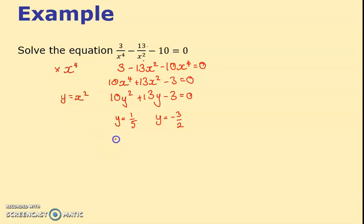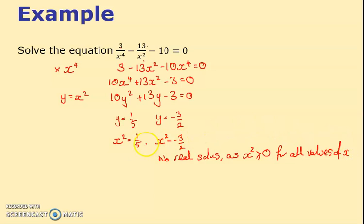I've got the same trick: x squared is a fifth, really not y at all, or x squared is a negative number. When you get negative numbers for these, this will be no real solutions as x squared is greater than or equal to zero for all values of x.